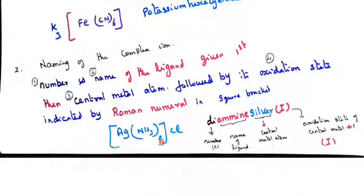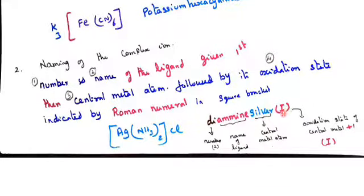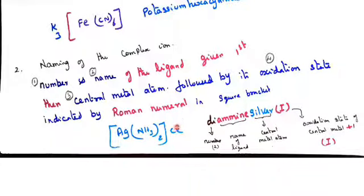For example, [Ag(NH3)2]Cl: this is diamine, so the number is di. First give the number — di, tri, tetra, penta, like that. Then name the ligand: this ligand is called amine. Then the central metal atom, which is silver. Then the oxidation state, which is plus one valency, written in Roman numerals enclosed in a close bracket — Roman numeral one. So: diamine silver(I). The last thing is the counter ion, which should be named as chloride.